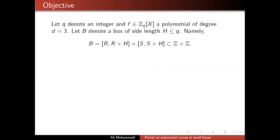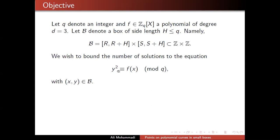The objective is: you have a polynomial, and for this talk, just to simplify things, I will focus on degree three, but really the techniques will work for various degrees. You have a box inside the Cartesian product of Z×Z, with horizontal side r to r+h and vertical s to s+h, keeping the side length h. For this talk I will talk about elliptic curves, so you have y²≡f(x) with f of degree three, and you want to find an upper bound for the number of solutions with (x,y) belonging to this box. Importantly, q is an integer.